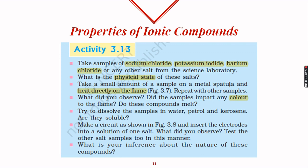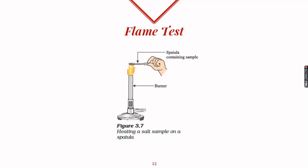With the help of Activity 3.13 from the textbook, we will take samples of sodium chloride, potassium iodide, and barium chloride and check their physical state — all these salts are found to be hard solids. We then keep these samples on a metal spatula and heat them directly on a Bunsen burner flame, which is called a flame test.